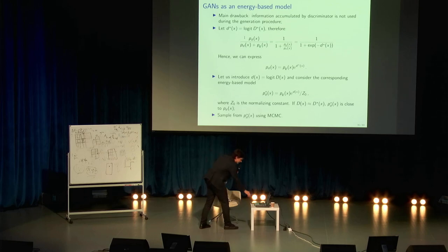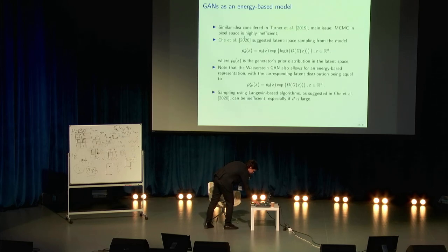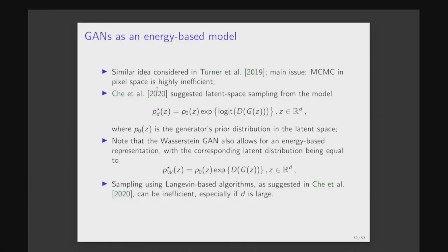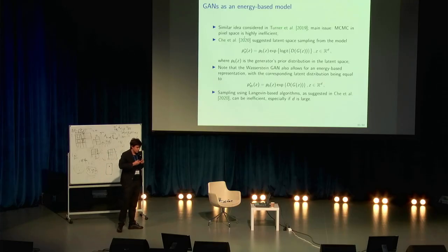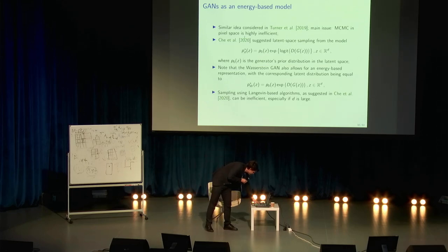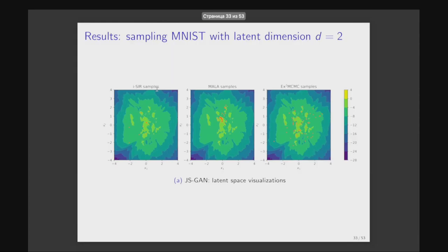There is a nice energy-based interpretation of GANs suggested in a recent paper by Chen and other students from Joshua Bengio's group. Who in fact suggested the kind of energy-based interpretation of the GAN. So, instead of just sampling from generator, taking the push forward and saying that, okay, now this is our final sample. Instead, they suggest to sample from some latent space distribution, which is associated with the pair of discriminator and generator. And in fact, this can be done with MCMC. Both distributions are on the slide, for example, for the Wasserstein GAN and for the classical vanilla Jensen-Shannon GAN.